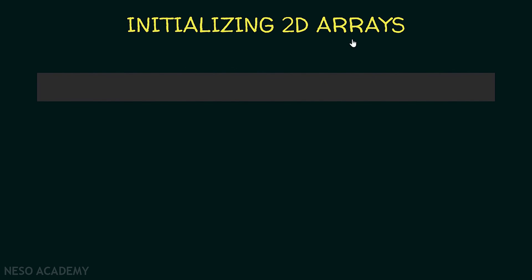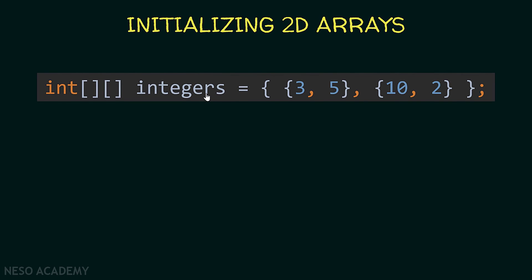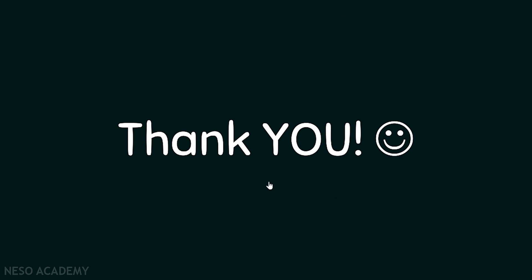Now let's see how we can initialize 2D arrays. I'm creating a 2D array of integers and initializing it with values. We have these braces — this is our array. The first element of this array is an array that contains two elements, three and five. The second element is also an array and has two elements, ten and two. So the compiler will automatically allocate two rows and two columns for this array. Thanks for watching and I'll see you in the next video.